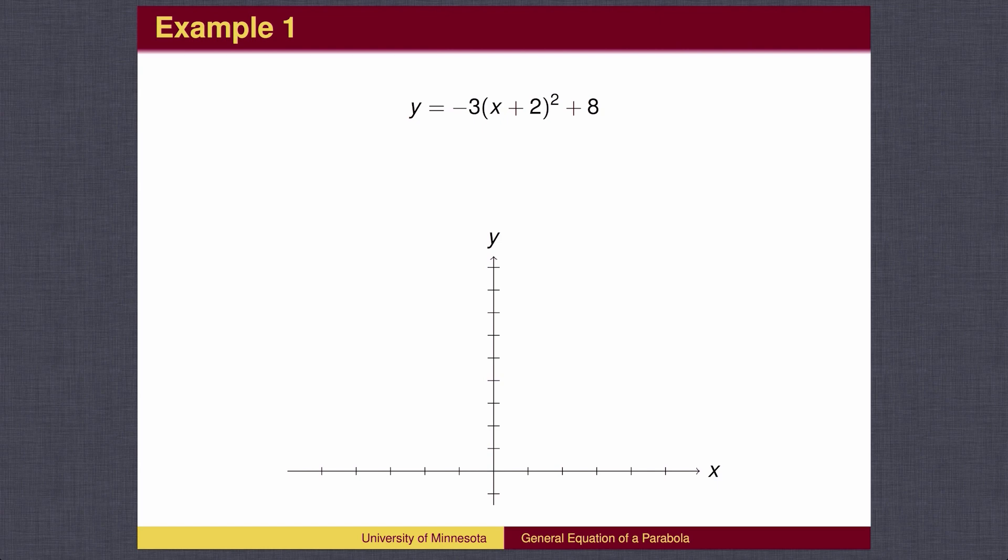It is not in standard form. We should subtract 8 from both sides. We now see the vertex will be at (-2, 8). The parabola points downward and is stretched by a factor of 3.